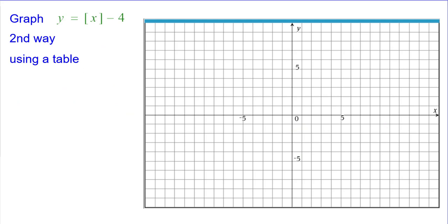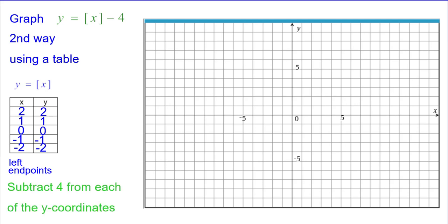The second way is using a table. We'll start off with the greatest integer of x, and we're just going to look at the left endpoints because then we know how to make the step from that. We're going to subtract 4 from each of the y-coordinates.